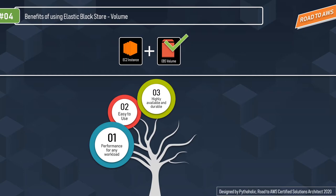Five nines, or 99.999% availability, means five minutes and 15 seconds or less downtime per year. Six nines — 99.9999% — allows 32 seconds or less downtime per year. Four nines — 99.99% — allows 52 minutes and 36 seconds downtime per year. You can find comparisons online or on Wikipedia. Essentially, the more nines you add, the less downtime you have.